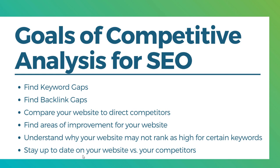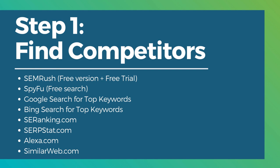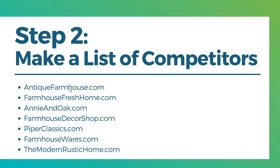For this particular video, I'm going to be going through six steps. Step one is going to be to find competitors. When I was trying to find competitors for farmhousegoals.com, I already know some of my competitors, so if you know some of yours, just start creating a list. Step two is to make a list of your top competitors.